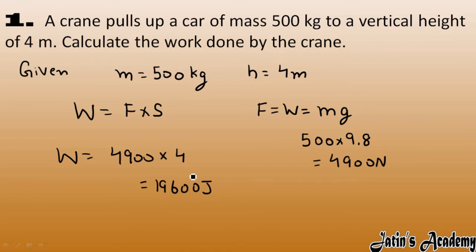Now you can also convert it into kilojoule. How? By dividing by a thousand and multiplying by 1000. So this 1000 joule becomes kilojoule and here we get 19.6. So total work done in this case we can say that 19.6 kilojoule.